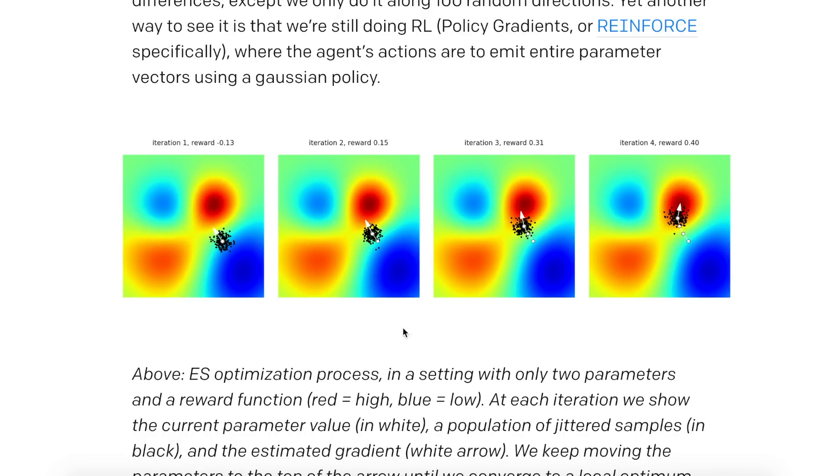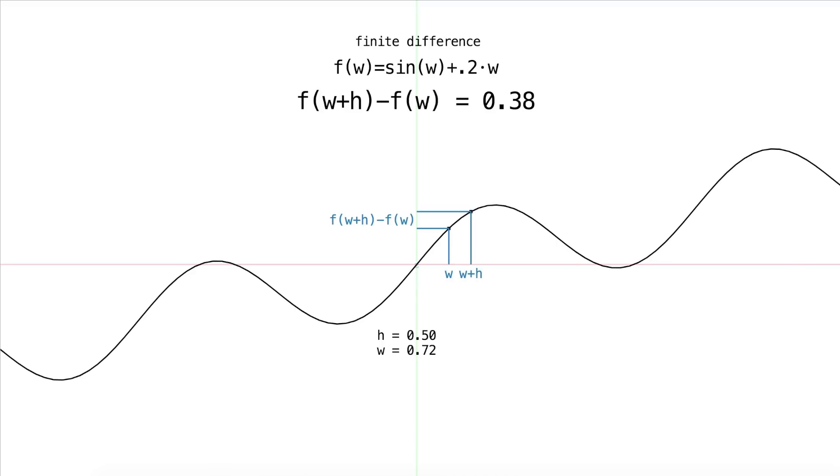Now, evolution strategies is based off an idea called finite differences. So finite difference may sound a bit complicated, but you're likely already familiar with it, and the ideas behind it are pretty simple. We have some function f, this wavy thing here, and we want to get an idea of how it changes over a small change in its input.